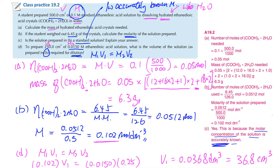Some of you may wonder: 36.8 cm³ - do we have a pipette for that? The answer is no. We don't have a pipette to be that specific for 36.8 cm³. However, we can use other apparatus to help us. In this case, I will recommend you to use a burette instead. You'll know that a burette is also a very accurate apparatus, and it can deliver or transfer a variable volume of solution.